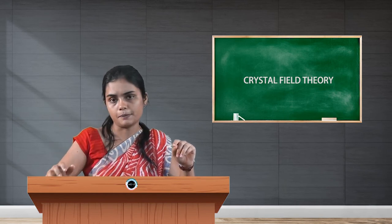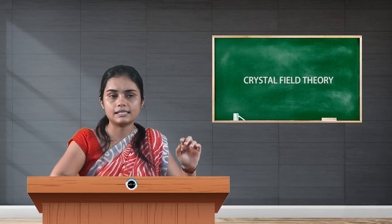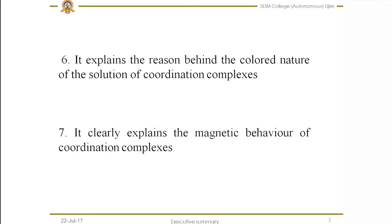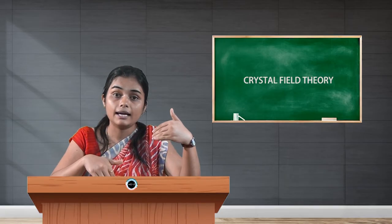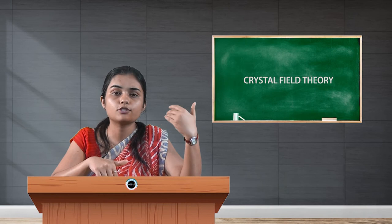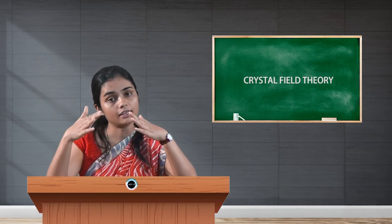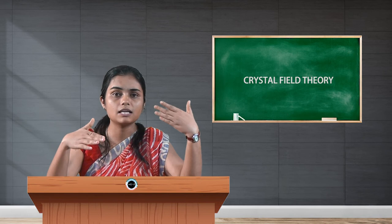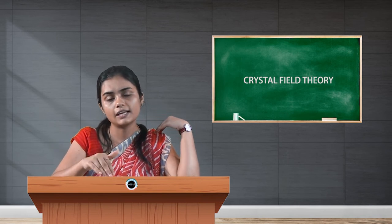The sixth postulate says that CFT explains the reason behind the colored nature of coordination complexes, which VBT failed to explain. This is one of the main criteria because transition metal complexes exhibit color. We know that potassium permanganate and potassium dichromate are colored in nature, and that was something VBT failed to explain. CFT proved to be successful in explaining these factors.